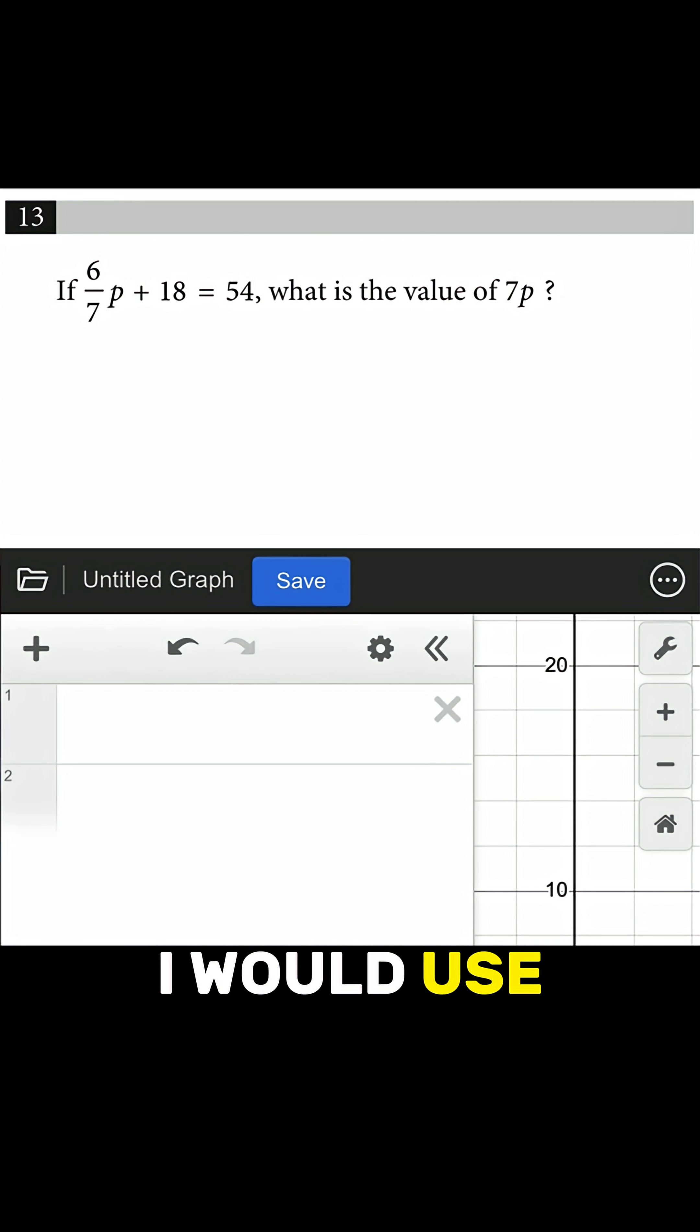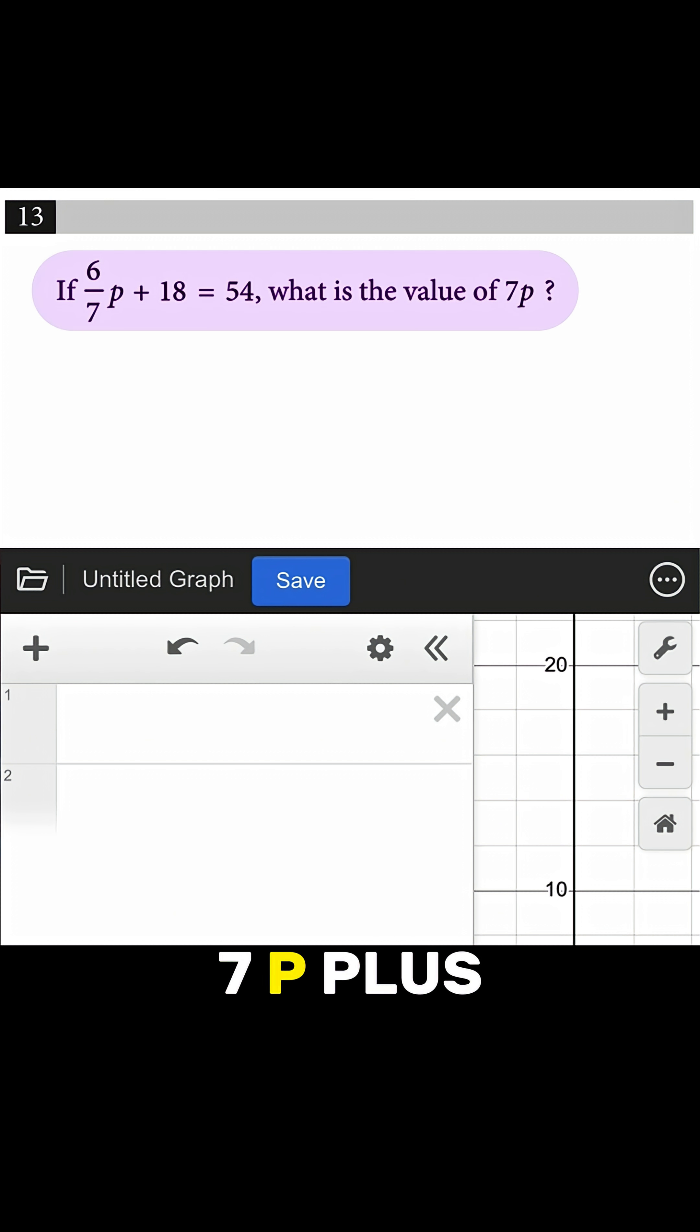I'm just going to show you how I would use Desmos for any question that you could possibly use Desmos for. So let's start with number 13: if 6 over 7p plus 18 equals 54, what is the value of 7p?